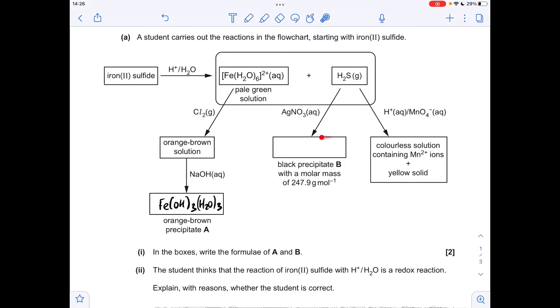Moving on to this black precipitate B with the molar mass 247.9. That's been formed from the reaction between hydrogen sulfide and silver nitrate solution. So if we think about the ions at play,